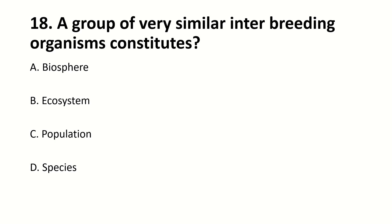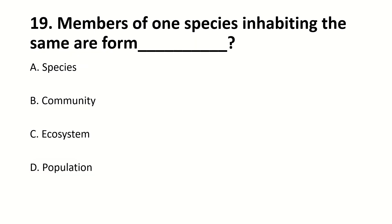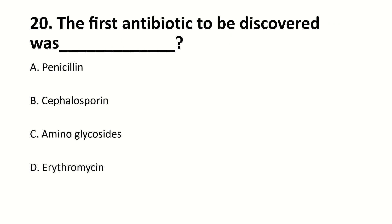A group of very similar interbreeding organisms constitutes what? The answer is D — Species. Members of one species inhabiting the same area are called what? The answer is D — Population.